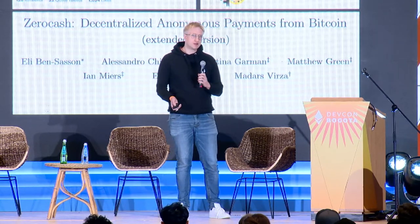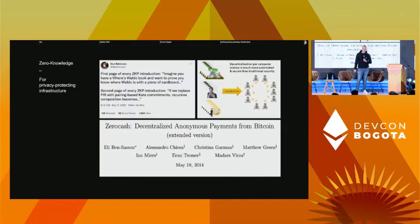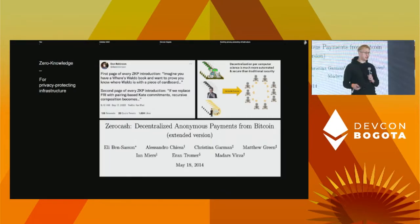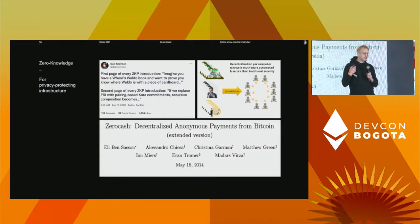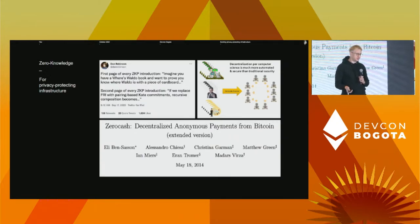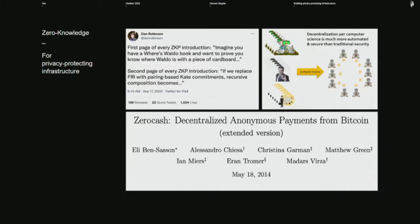Zero-knowledge proofs are a wonderful new tool. Just like smart contracts enable programmable money, zero-knowledge proofs allow us to express fundamentally new things. In line with the great tradition of trust minimization, you can prove statements while revealing the absolute minimum information necessary. This fits the definition of privacy — the power to selectively reveal yourself — perfectly. This is truly revolutionary.